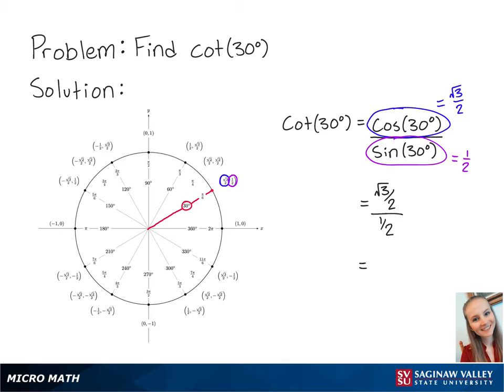If we want to simplify this, we're going to multiply the numerator by the reciprocal of the denominator. Since there's a 2 on the top and the bottom, these will cancel out, and we are left with the square root of 3. And this is the final answer.